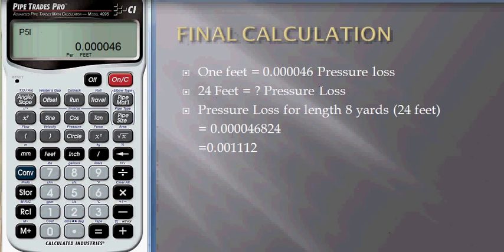If we multiply 0.000046 with 24 feet, we'll have 0.000046 times 24 is equal to 0.001112. So this is the pressure loss for length 8 yards.